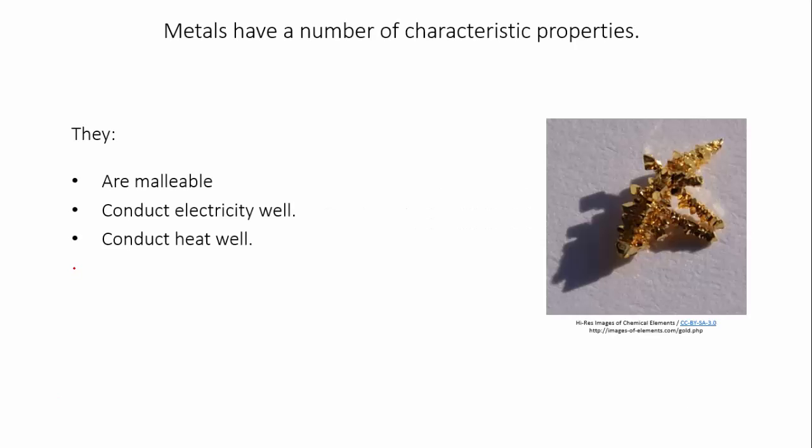Metallic substances have a number of characteristic properties. They're malleable, they conduct electricity well, they conduct heat well, and they also have that shiny metallic luster that is so recognizable.